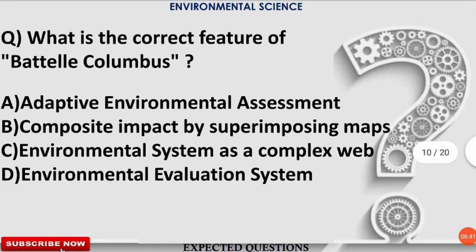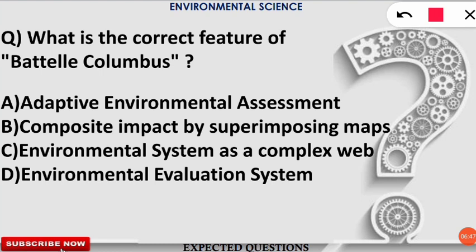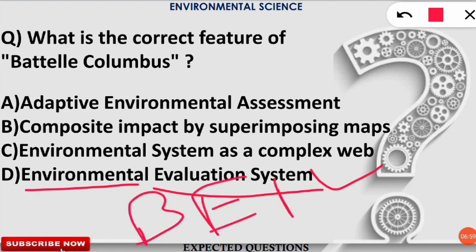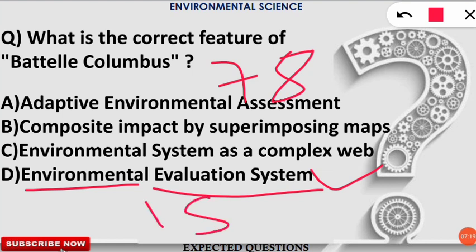The next question: what is the correct feature of Battle Columbus? The correct option is D — Battle Columbus is an environmental evaluation system, also called BEES (Battle Environmental Evaluation System), and it is used for water resource planning. Importantly, it has 78 parameters, 18 components, and 4 categories — these specific numbers have been asked in exams.